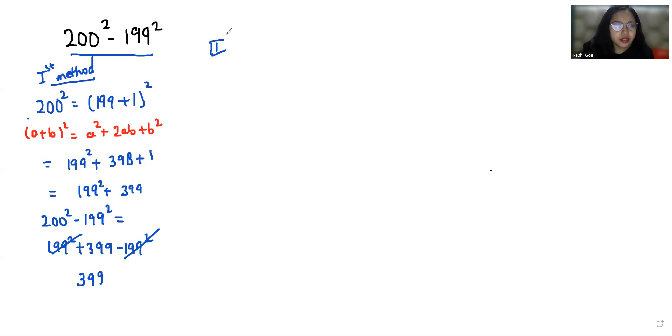Now second method. We'll take this 199 and we can write it as 200 minus 1 whole square. And in this case we are going to use the identity a minus b whole square which is equals to a square plus b square minus 2ab.